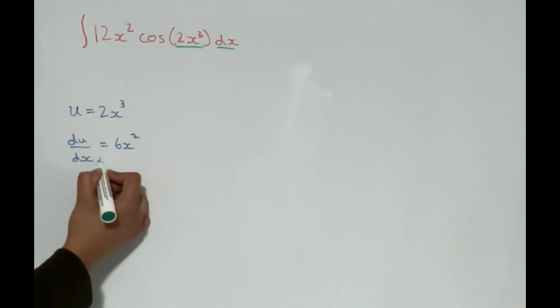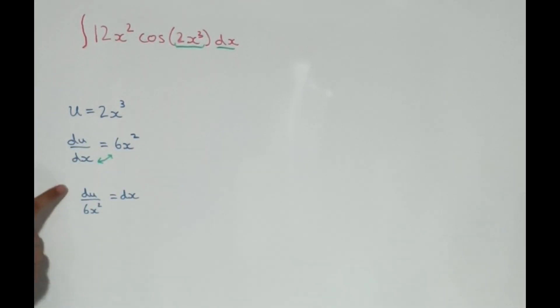And now if we rearrange this and swap these two over, we're going to get du/(6x squared) equals dx.